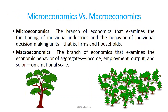Economics can be divided into two main branches: microeconomics and macroeconomics. Microeconomics is the branch of economics that examines the functioning of individual industries and the behavior of individual decision-making units — that is, firms and households. For example, the demand of a certain household or the production of a certain firm are topics related to microeconomics.